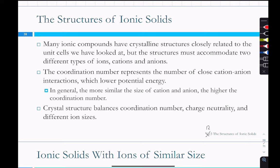The coordination number represents the number of close cation interactions, so a higher coordination number means more of these interactions, which in turn causes lower potential energy — more interaction between positive and negative charges. The more similar the size of the cation and anion, the higher the coordination number. The crystal structure is a balance of coordination number, charge neutrality, and the sizes of the ions.